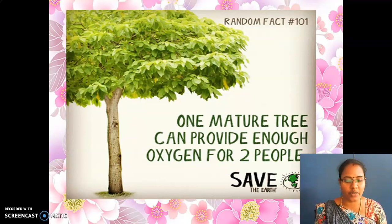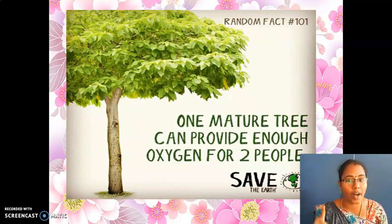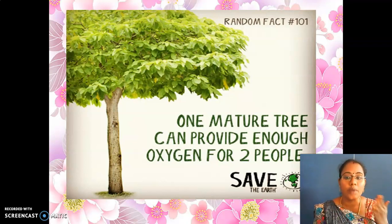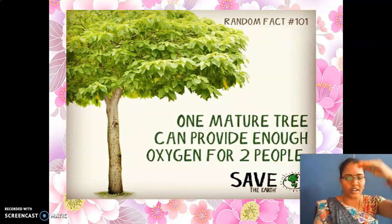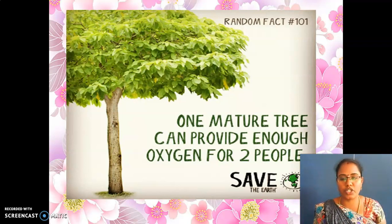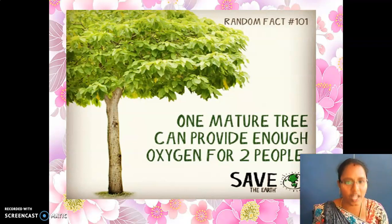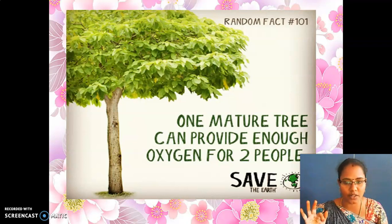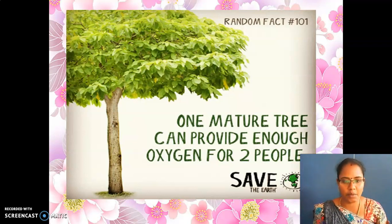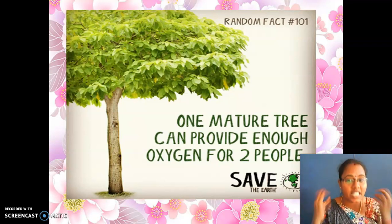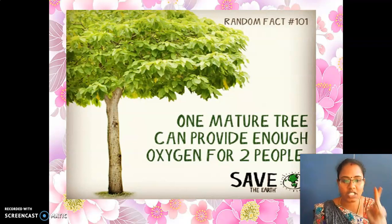One mature tree can provide enough oxygen for two people — this is a very interesting fact. One mature tree means that tree must be around eight to nine years old to be mature. We are all breathing oxygen, and that oxygen can be provided by one mature tree. So if you are growing a tree in your home, you are getting enough oxygen from that tree. That is why I am telling you — a tree is also a friend to you.